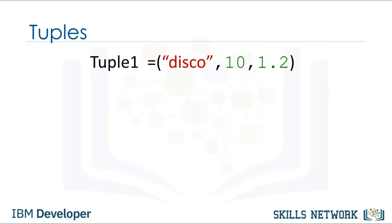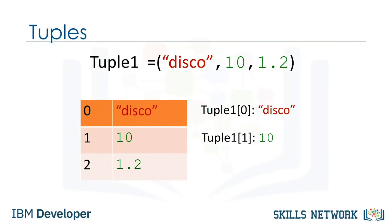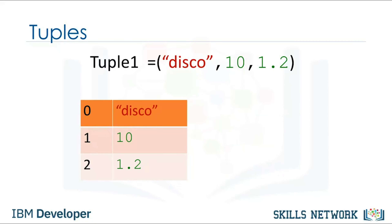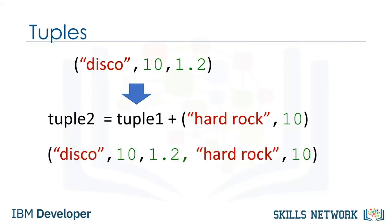Each element of a tuple can be accessed via an index. The first element can be accessed by the name of the tuple followed by a square bracket with the index number — in this case, zero. We can access the second element similarly, and also the last element. In Python, we can use negative indexing.